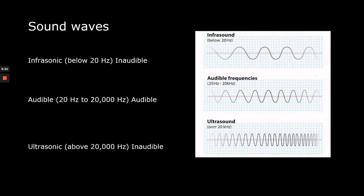Generally, sound waves are classified into three categories based on their frequencies. Sound waves of frequency less than 20 hertz are known as infrasonic sound, which are inaudible to the human ear. The audible range of frequency starts from 20 hertz to 20,000 hertz, which humans can easily hear. Ultrasonic sounds have frequencies above 20,000 hertz and are also inaudible to the human ear.